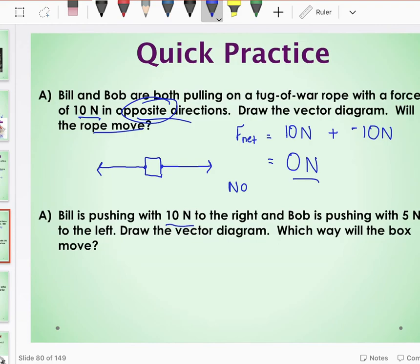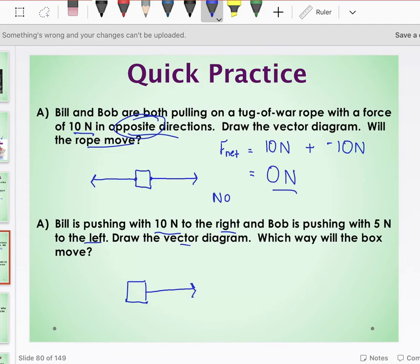Next, Bill is pushing with 10 newtons to the right, and Bob is pushing with 5 newtons to the left. Draw the diagram, will the box move? So again, the only difference here is my length of arrows have changed. So Bill is pushing, even though Bill is pushing, his arrow still actually moves away from the object. And Bob is pushing with 5 newtons to the left. Now I can see visually that the box will move to the right. And I can also do this with a quick calculation.